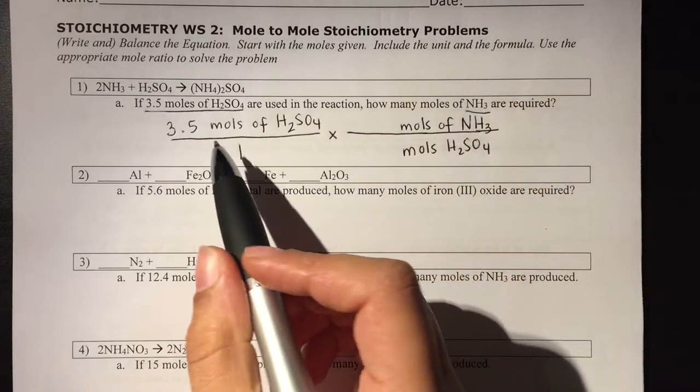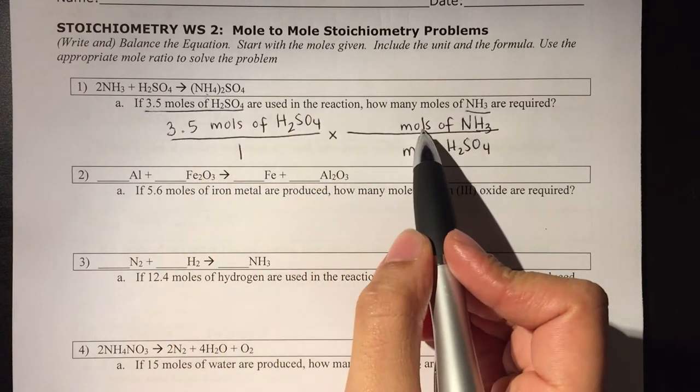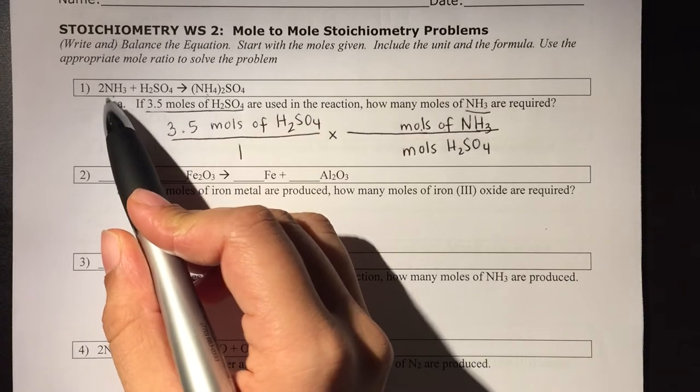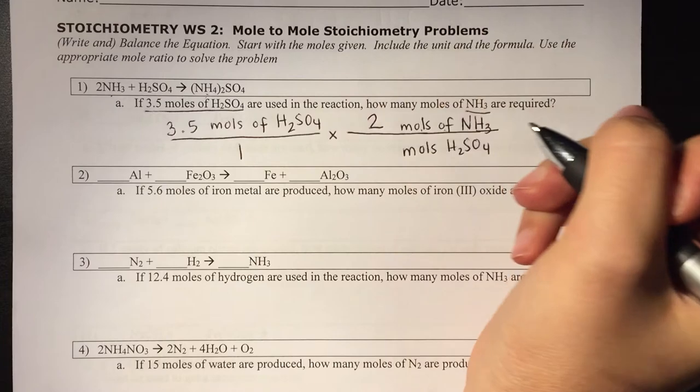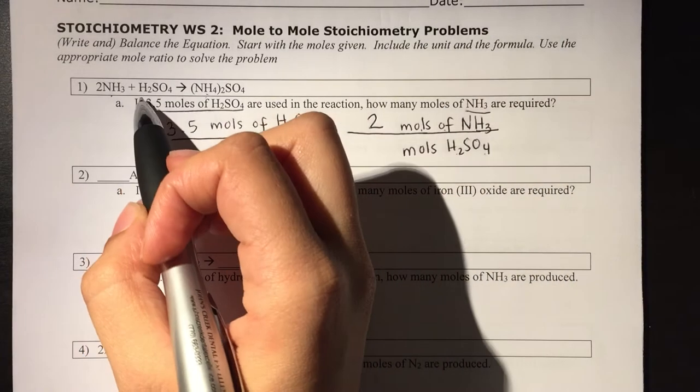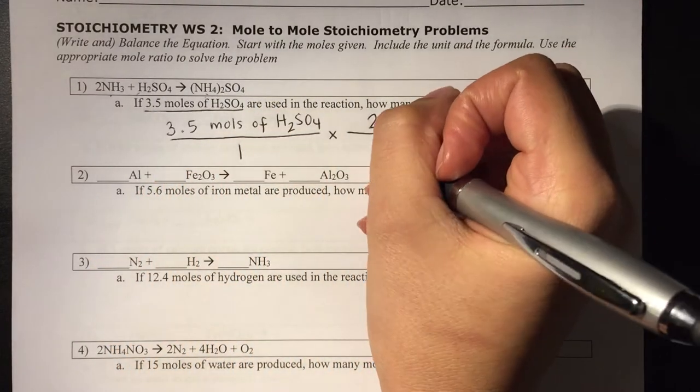Now I'm going to look at my equation to figure out what that relationship is. So for moles of NH3, if I look at NH3, I only have 2. So I'm going to put that 2 up here. If I go to H2SO4, there's no coefficient here, which doesn't imply 0, it implies 1.